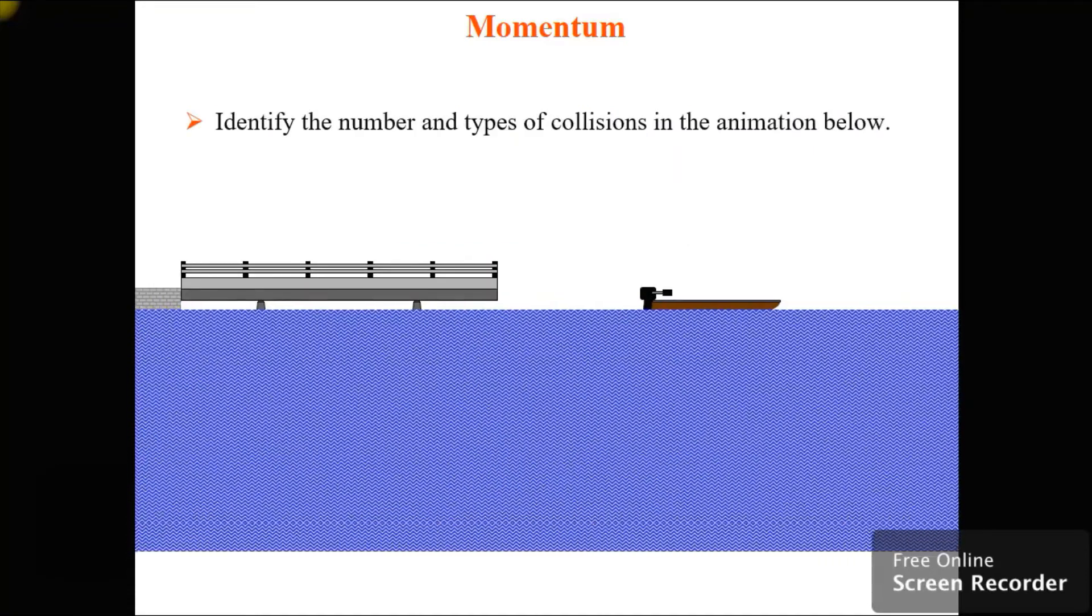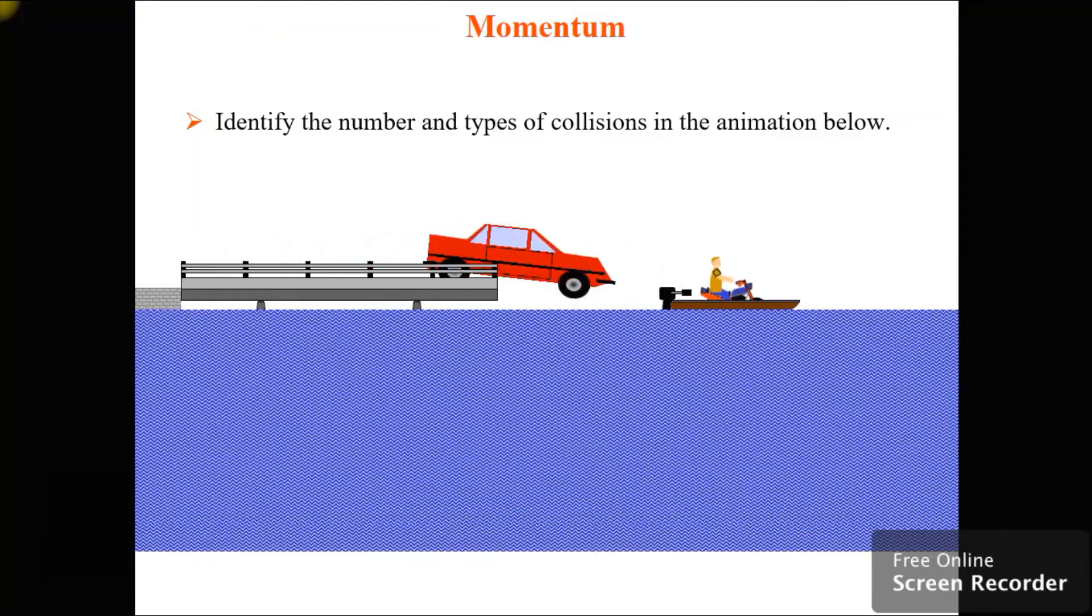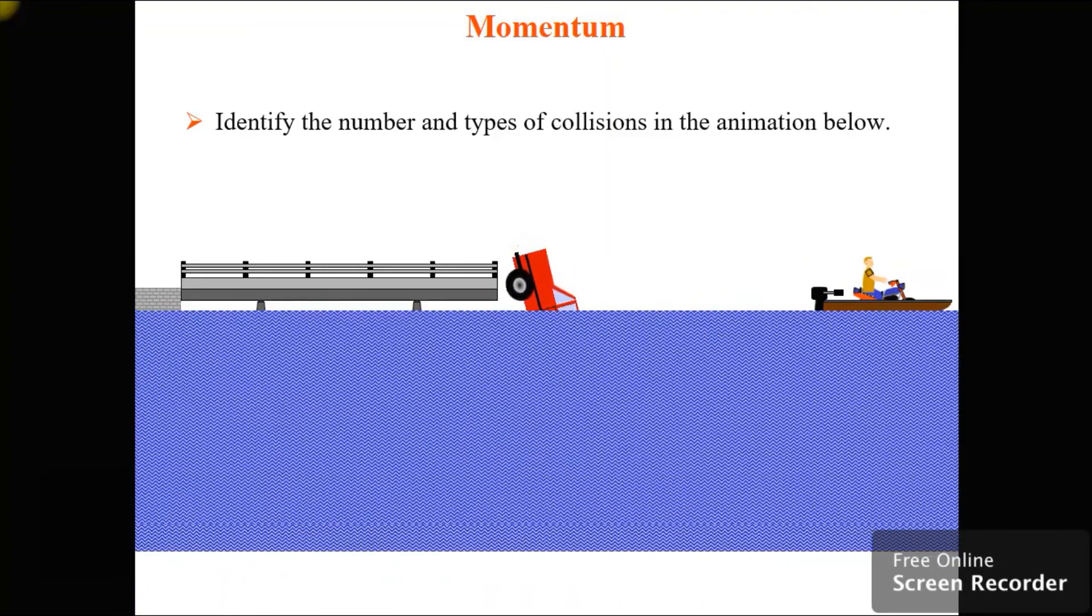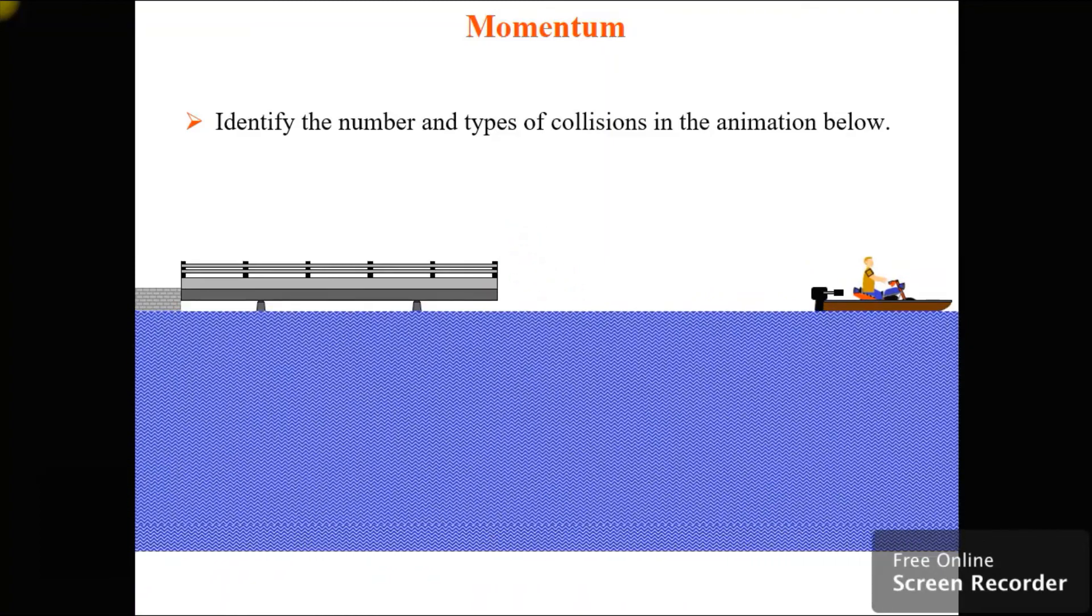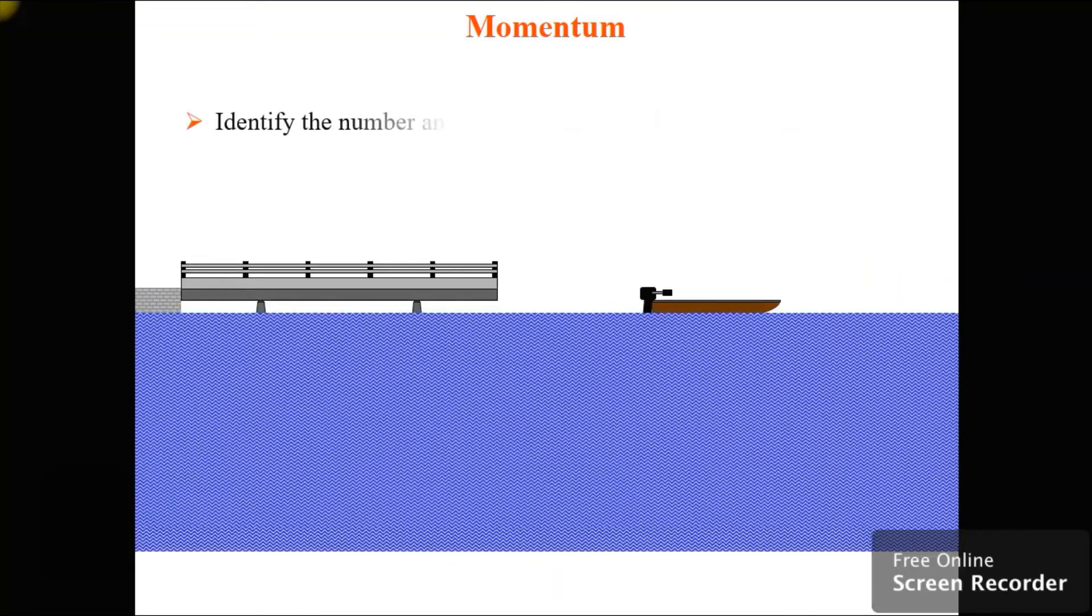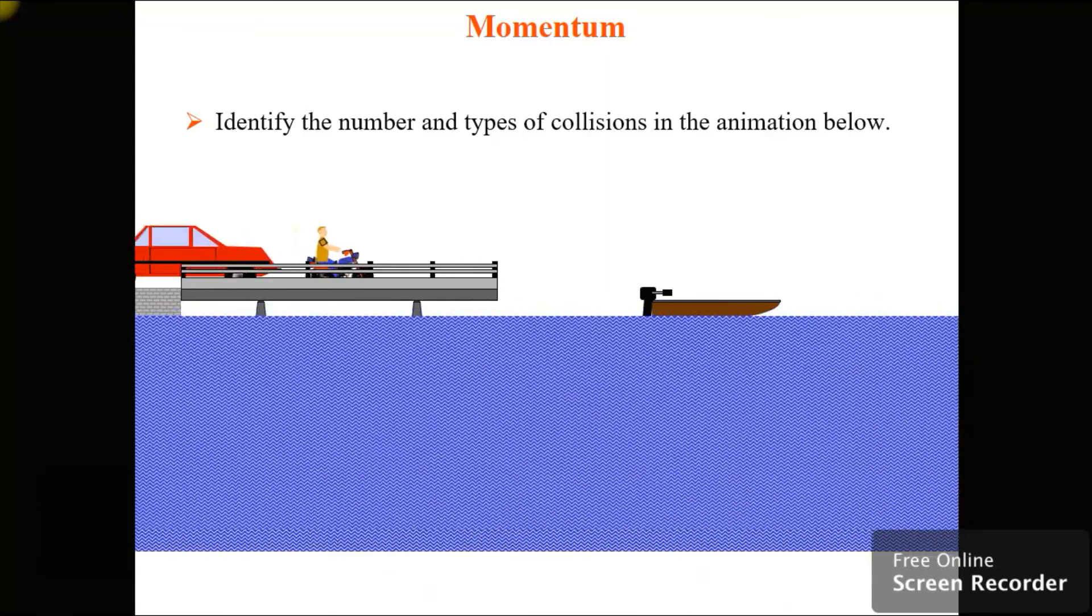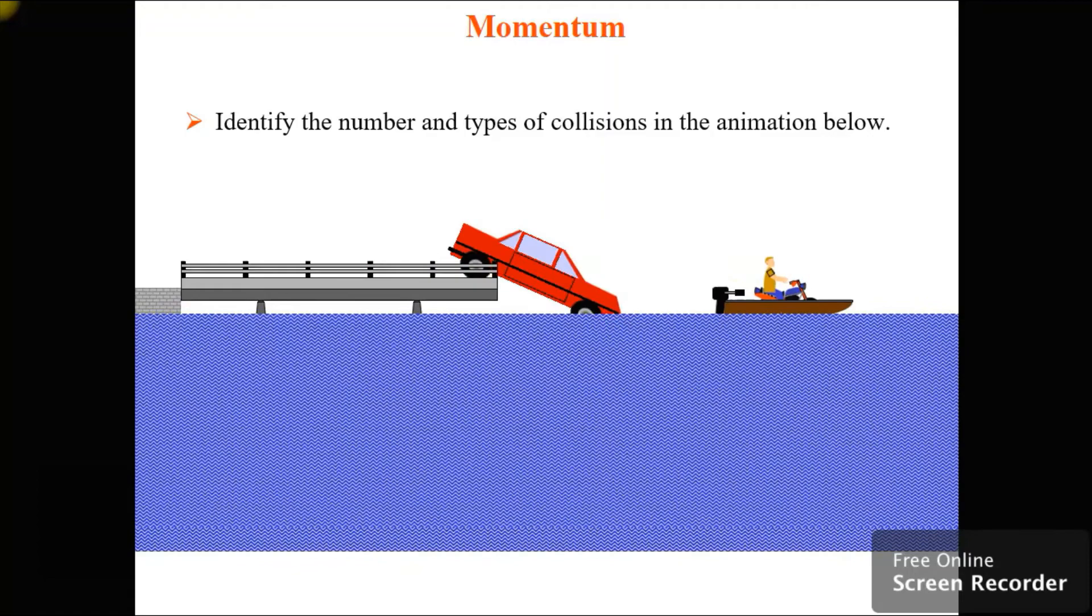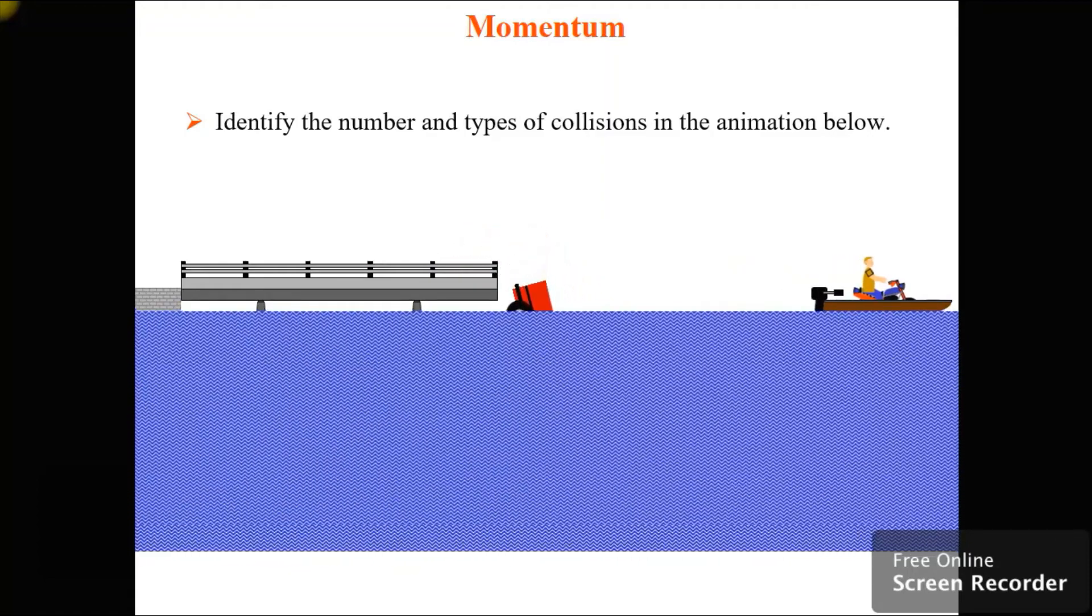How about in this one? Bang! Did you see that the car actually hit the motorcyclist just before it got to the end of the dock? See if I can do that one again? There we go. Bang! So there's a collision between the motorcycle and the car, and then the motorcycle and the boat.